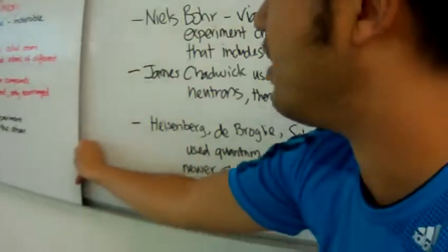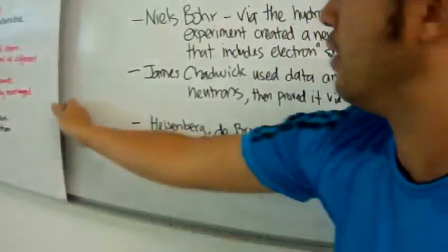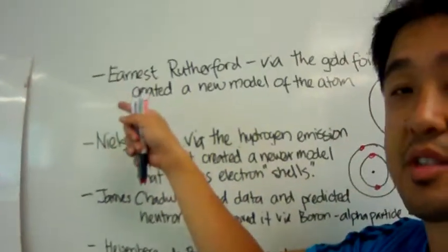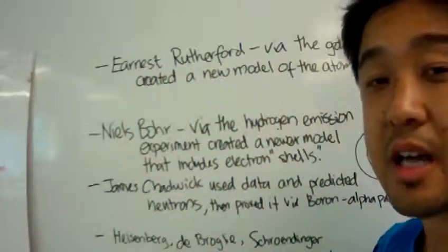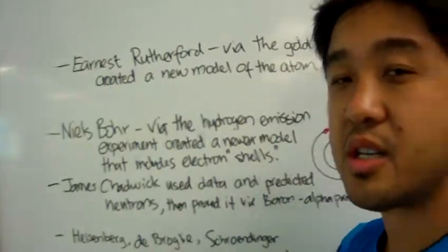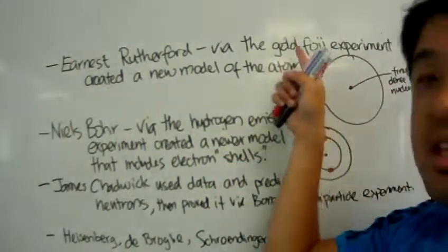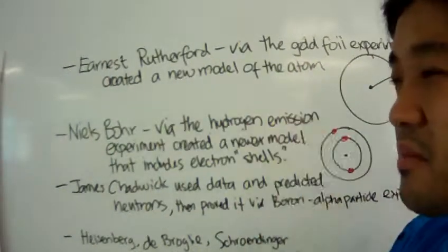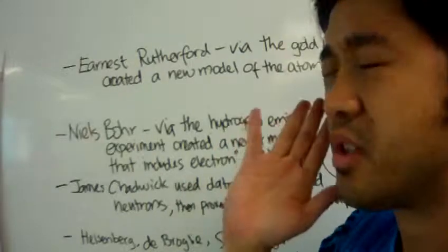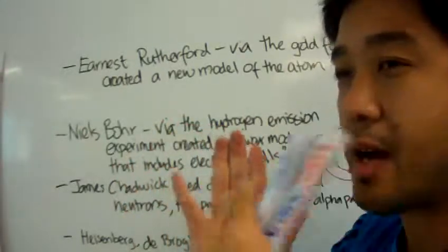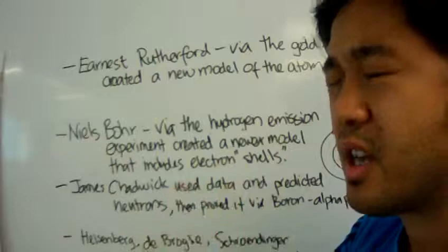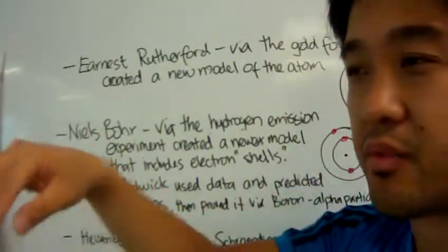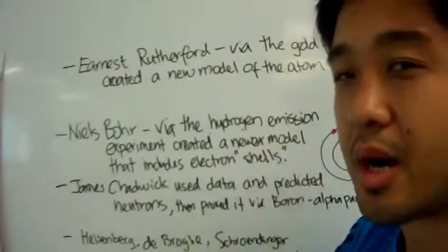Further on after that, a guy came along by the name of Ernest Rutherford. By the gold foil experiment, he created a new model of the atom. Basically what happened was there was a thin piece of gold foil being bombarded by alpha particles, and then surrounding the experiment, the bombardment of the gold foil by alpha particles.